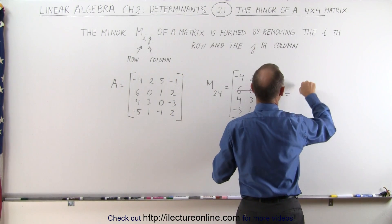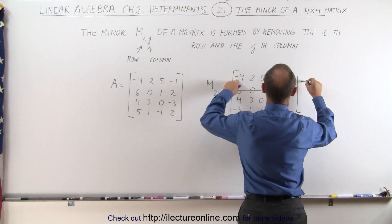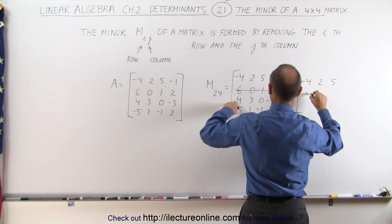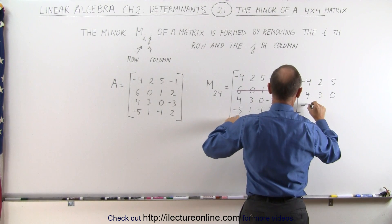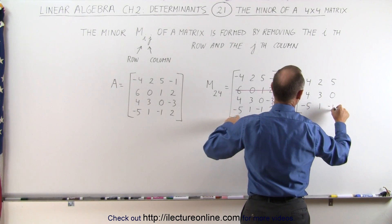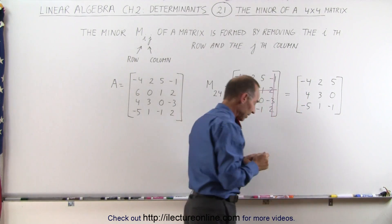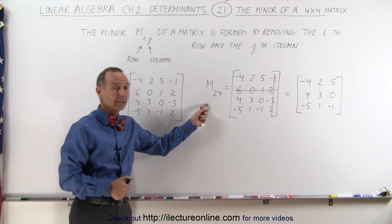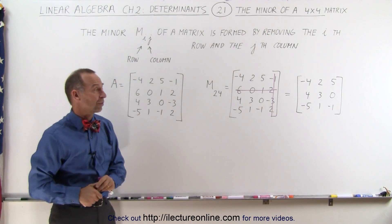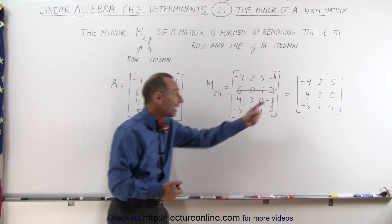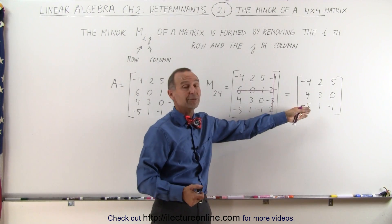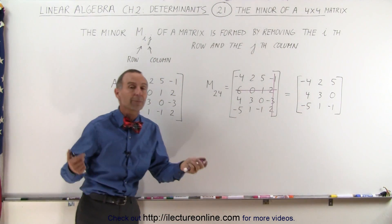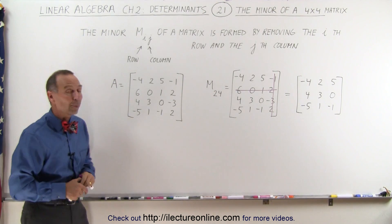This will therefore be equal to: minus 4, 2, and 5; then 4, 3, and 0; then minus 5, 1, and minus 1. Notice that since we started with a 4x4 matrix, finding the minor gives us a 3x3 matrix. We could potentially find a second minor by eliminating a row and column from that, but this is what we call the first minor — the primary minor of our original matrix.